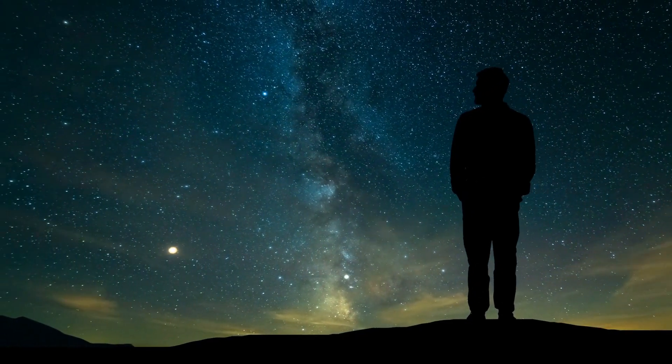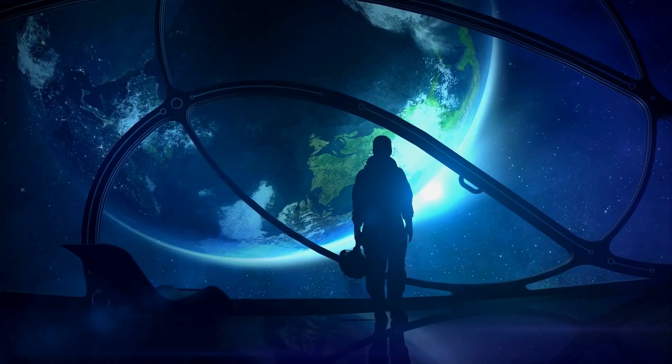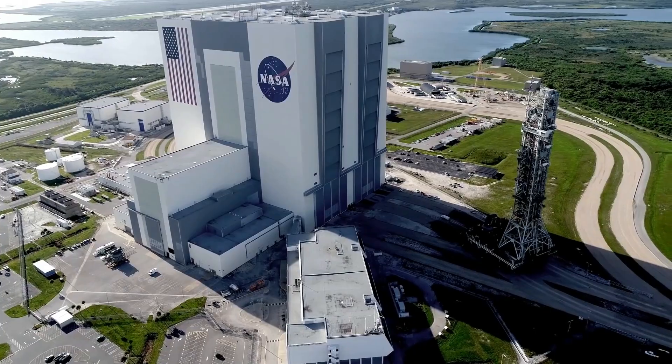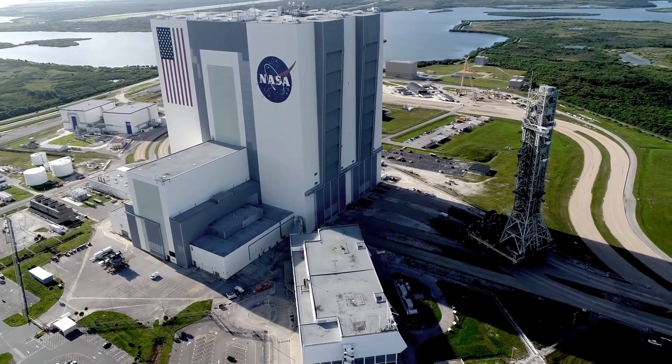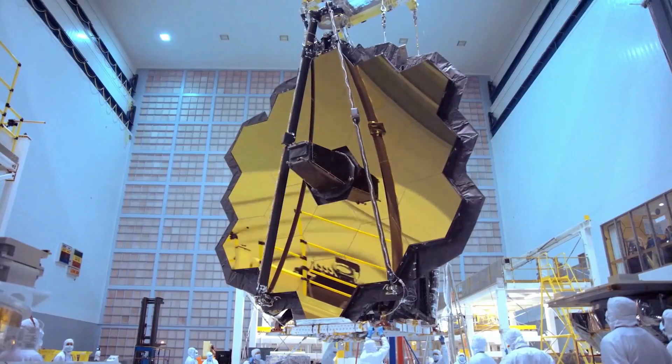What do you do when you want to observe somewhere so deep in space that you can never reach? You send a space observation station. NASA has done precisely that by sending the James Webb Space Telescope to deep space so that it can help us see more of our universe.